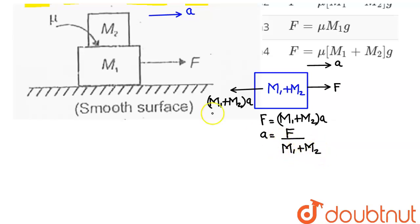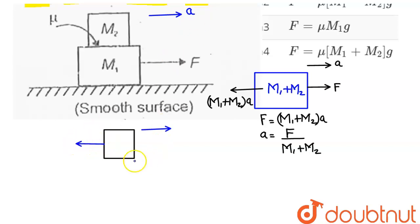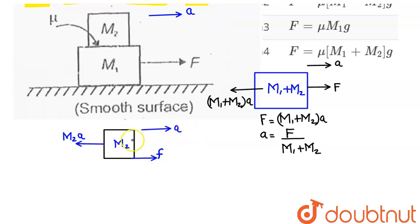The coefficient of friction between m1 and m2 is μ. Drawing the FBD for m2 only: m2 is moving right with acceleration a, so the pseudo force on m2 acts towards the left as m2·a. The friction between m1 and m2 acts on m2 in the rightward direction, to balance the pseudo force and impart acceleration a to m2. By Newton's third law, friction on m1 from m2 acts towards the left.